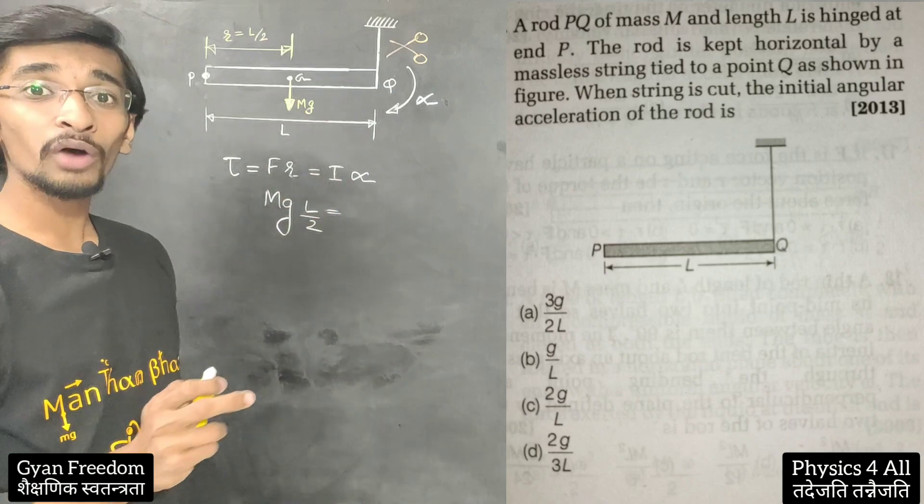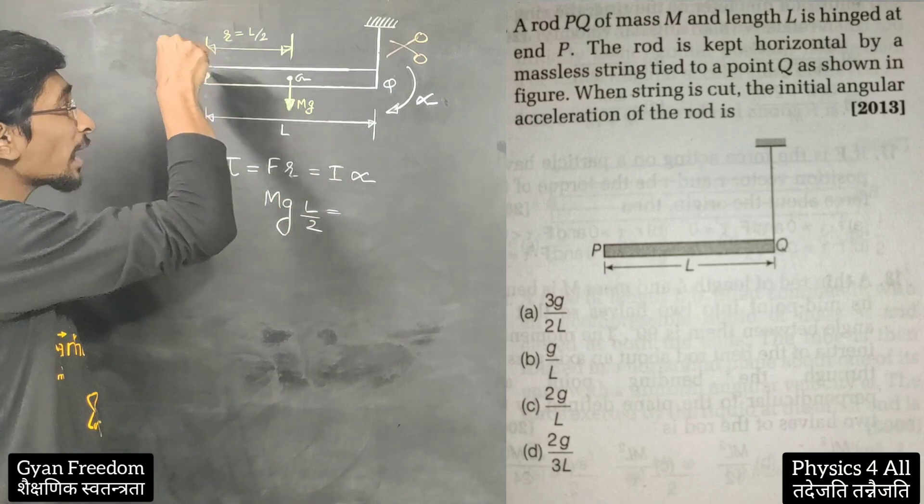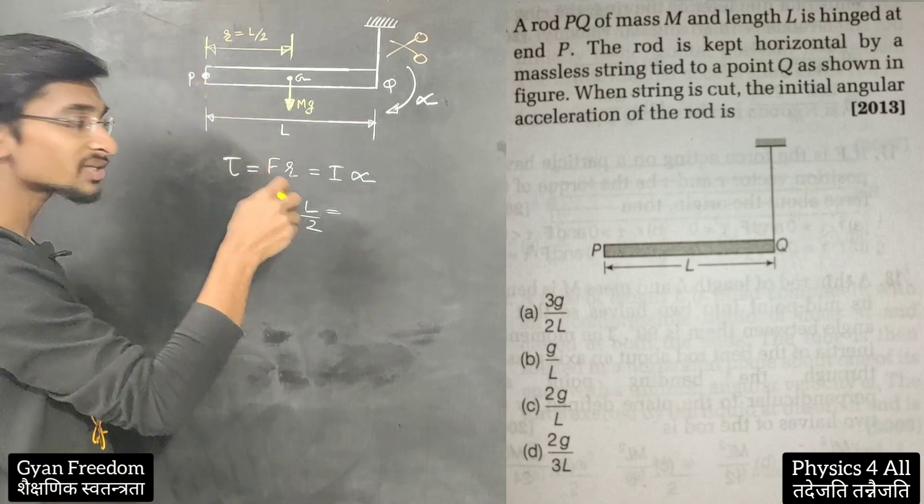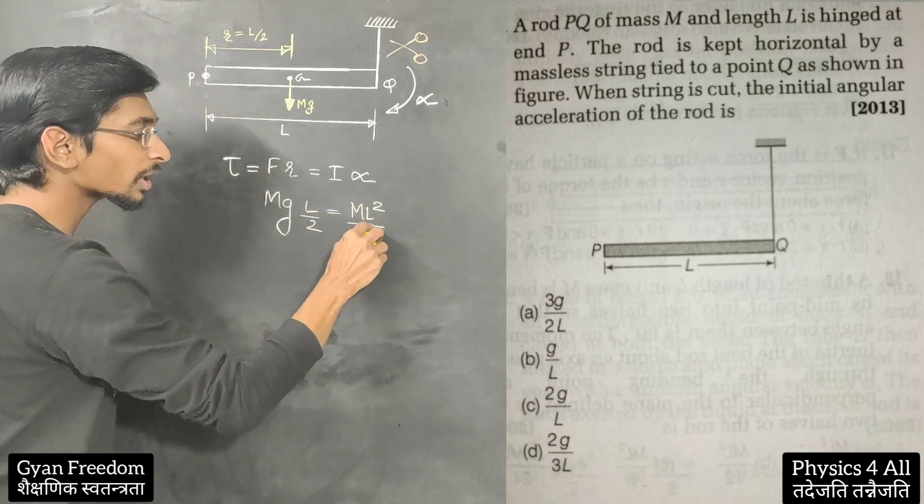And I is moment of inertia of a rod about an axis passing through the end. The rod will rotate from the end, so ML square by 3.